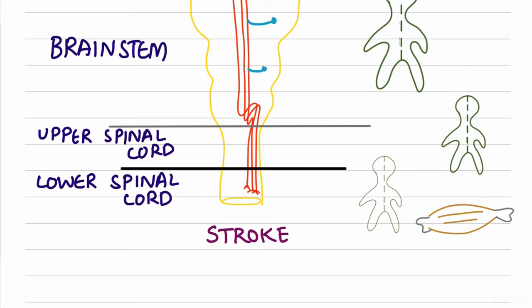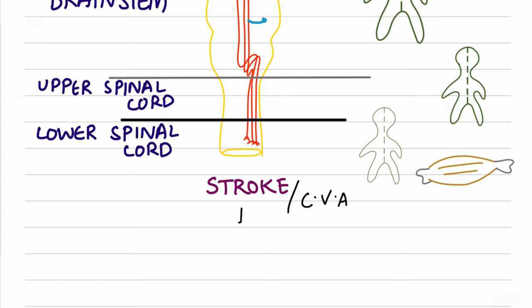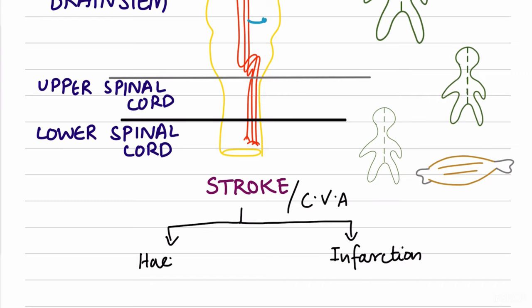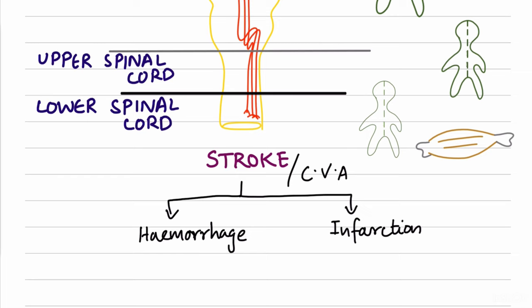Stroke, also called cerebrovascular accident, occurs due to dysfunction of CNS neurons. It can occur by two mechanisms: infarction — death of neurons due to decreased blood supply — or hemorrhage into the CNS. Infarction may be thrombotic or embolic. Understanding the location of the lesion within the pyramidal tract helps us determine the type of deficit produced.